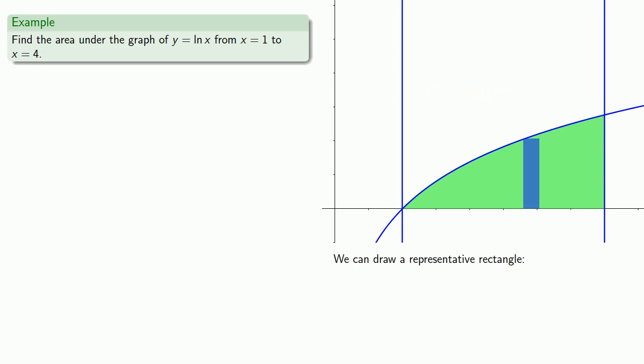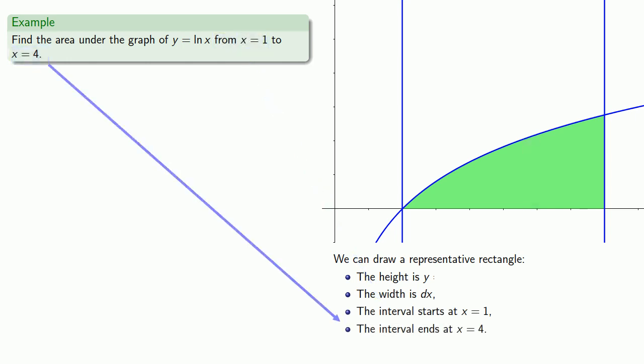Now the height of this representative rectangle is y. The width is a small portion of the x-axis, we'll call that dx. The interval starts at x equals 1 and the interval ends at x equals 4. And so we can sum up these representative rectangles whose areas are y dx from x equals 1 to x equals 4.